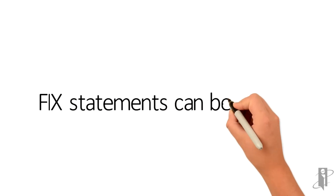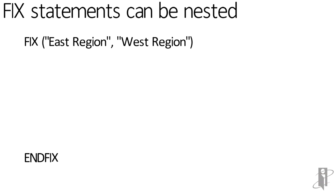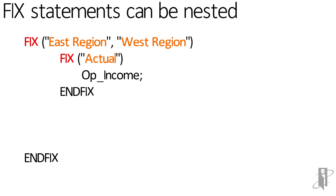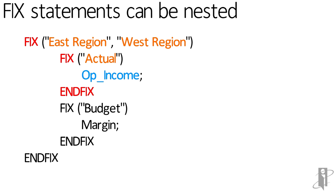You can nest FIX statements, meaning you put a FIX inside of a FIX. For example, fix on East and West — ignoring all other slices — then within that, fix on the Actual sub-slice of those regions and calculate Op Income, then fix on Budget and calculate the Margin member. Notice each FIX has a corresponding END FIX. You don't have to indent, but most people do for ease of readability.